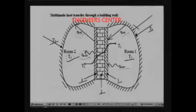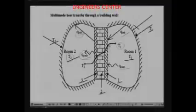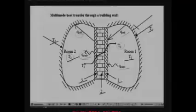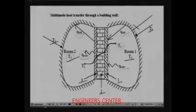We can also draw the temperature profile. If this is the temperature T1 of room 1, then assuming the temperature is uniform in the room, there will be a temperature drop at this point because of the resistances — convective and radiative resistance — and there will be a further temperature variation within the wall because of the conductive resistance. So the temperature profile varies like this. Again, from the wall to room 2, you have a temperature variation because of the convective and radiative resistances.